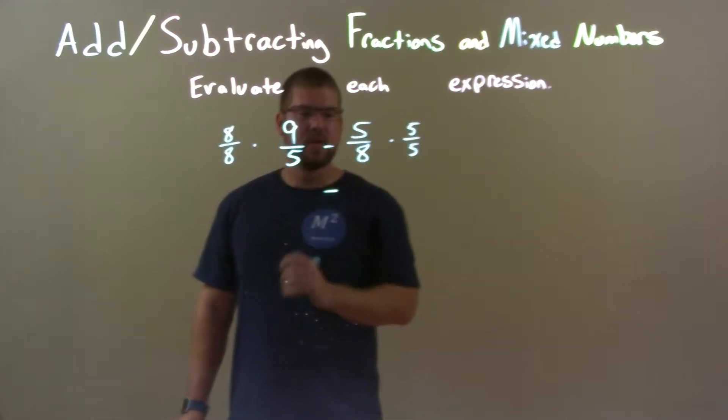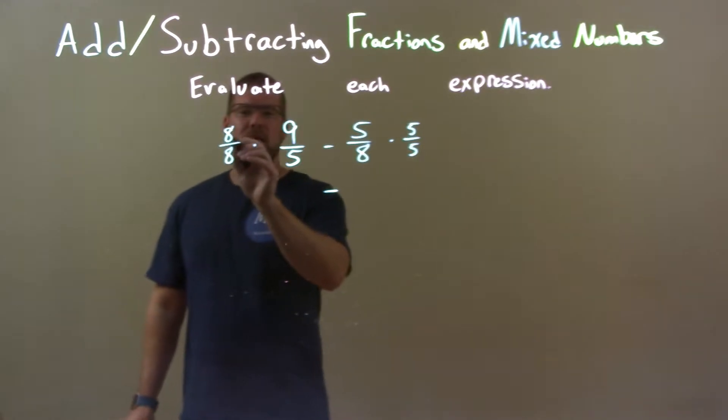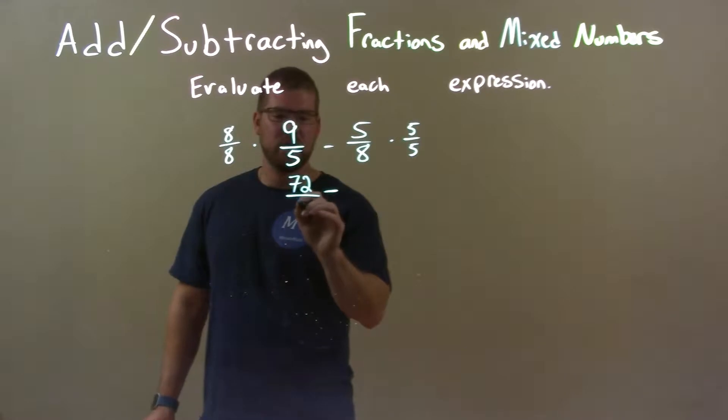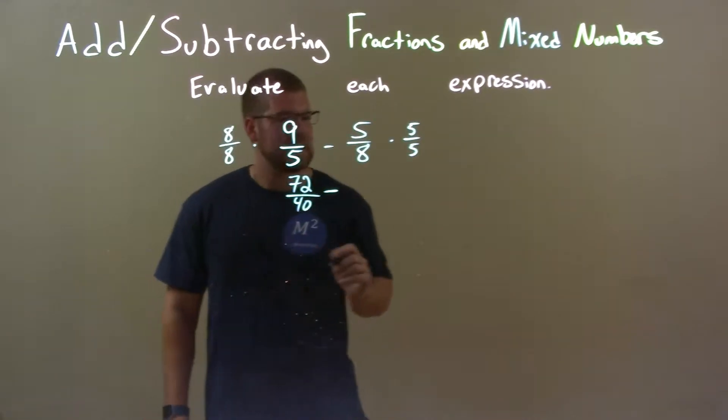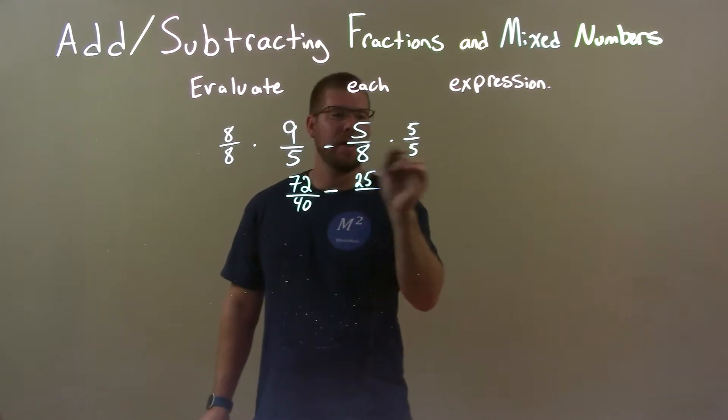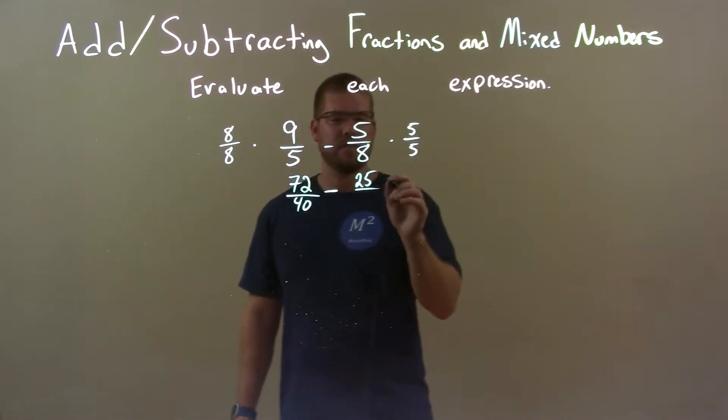So, subtraction sign there. Let's go to the left. 8 times 9 is 72, and 8 times 5 is 14. Now the right, 5 times 5, multiply across, 5 times 5 is 25, and 8 times 5 is 40.